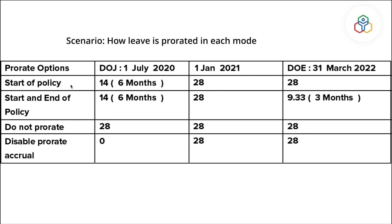Under Start of Policy, they will receive 14 days of prorated leave for the remaining 6 months in the current year. In the forthcoming years they will receive the full 28 days. Under Start and End of Policy, leave will be prorated on the year of joining and exit.